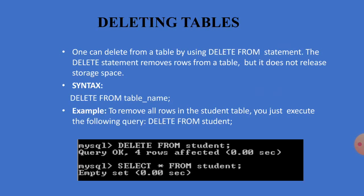Next, deleting tables. One can delete from a table using the DELETE FROM statement. The DELETE statement removes rows from the table but does not release the storage space — the rows are deleted but the structure remains. For example: DELETE FROM student — this deletes all 4 rows from the student table. If you want to release the occupied space as well, you use the DROP command. That is the difference between DELETE and DROP.